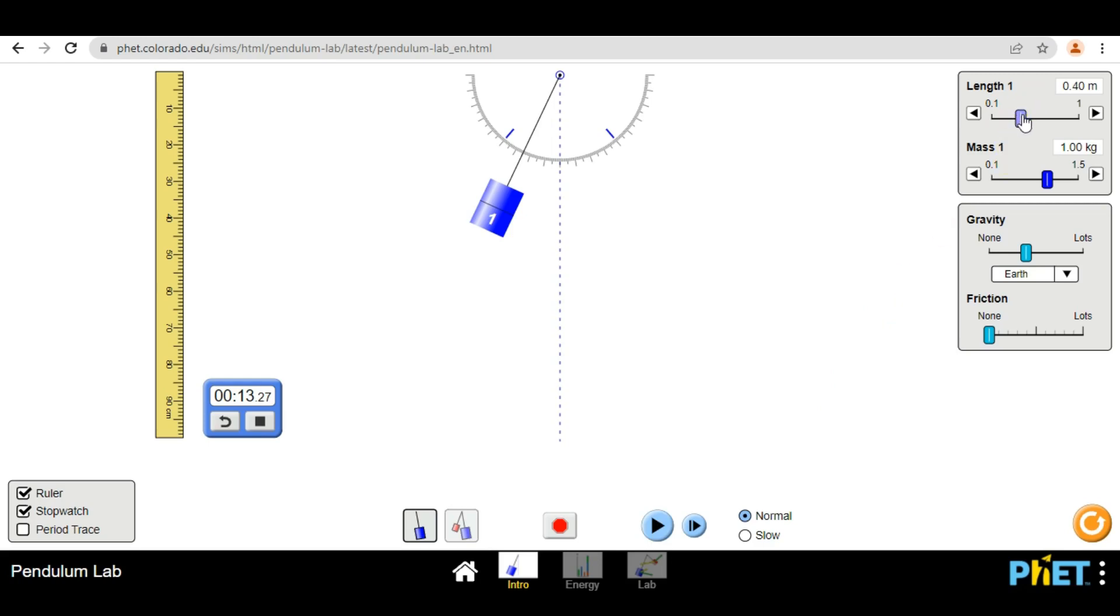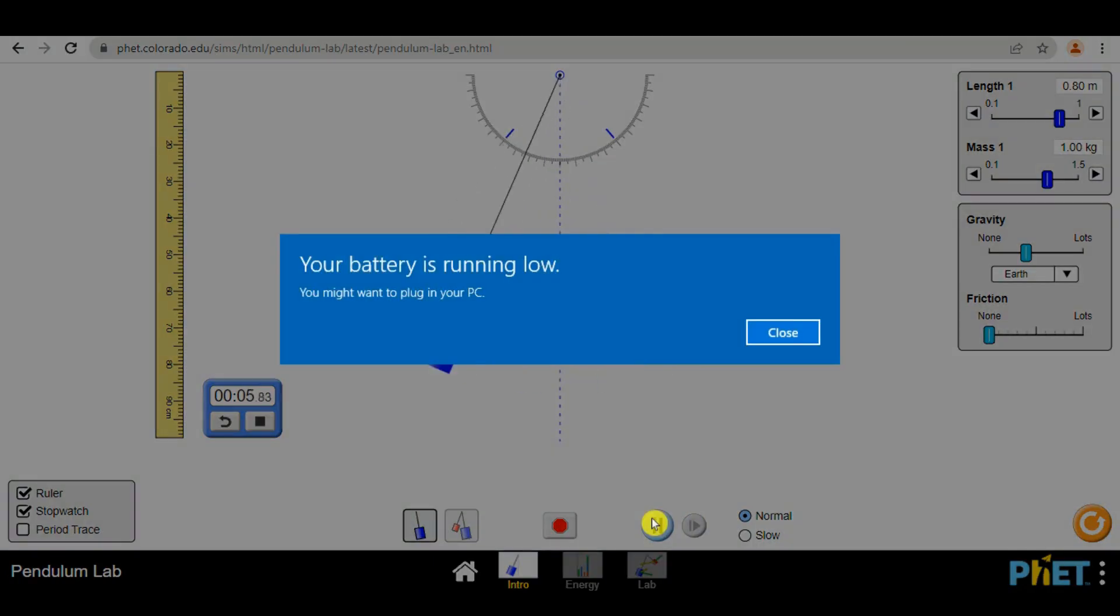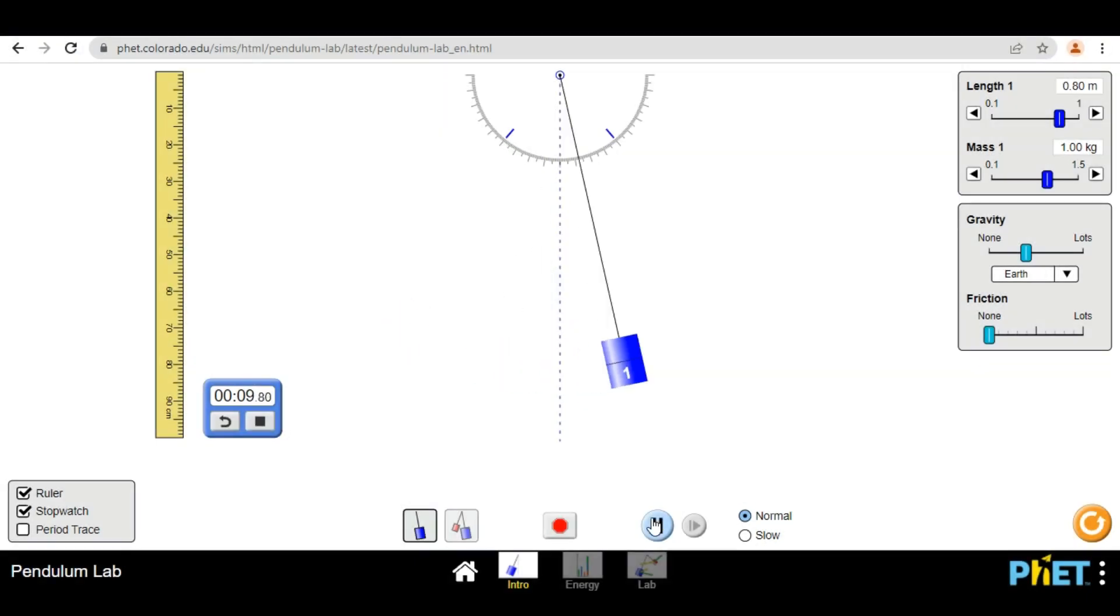I will change the length of the thread to 0.8 meter. I will reset everything and again I will move the pendulum. We will see the time period again. Go. 1, 2, 3, 4, 5, 6, 7, 8, 9, 10. Now I am getting about 19 seconds so I will take it as 1.9 seconds. When the length of the thread is 0.8 meter, I am getting the time period as 1.9 seconds and before it was 1.3 seconds. This proves that the length of the thread affects the time period of the pendulum. The more the length, the more time period. The less length, the less time period.